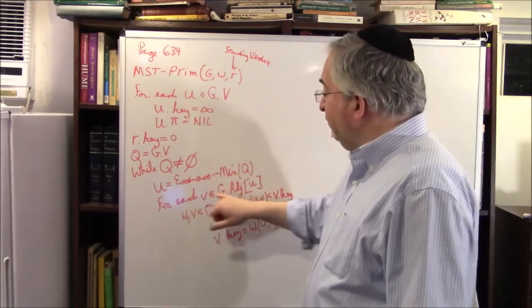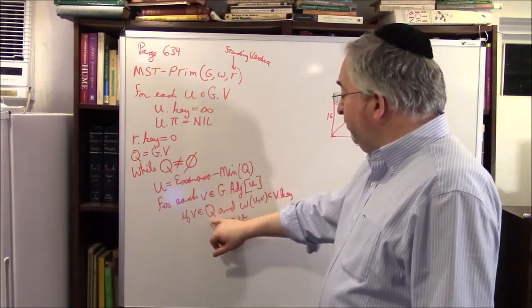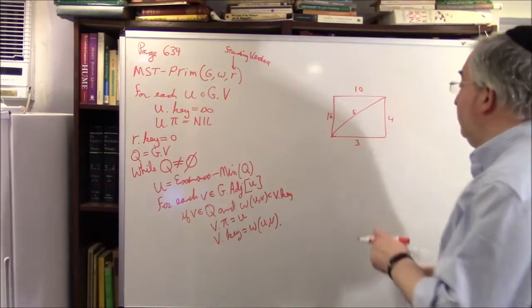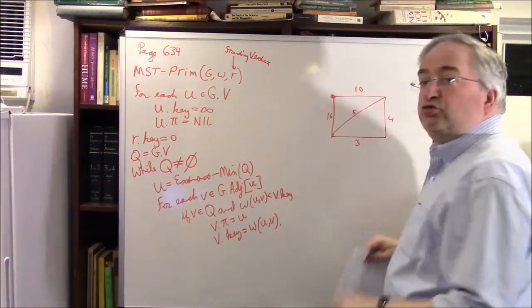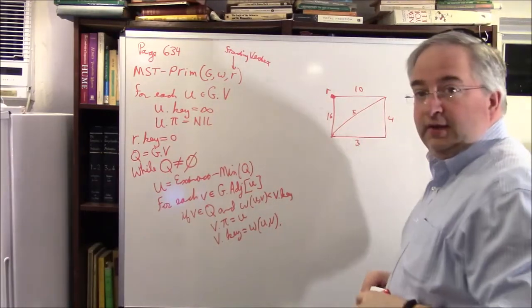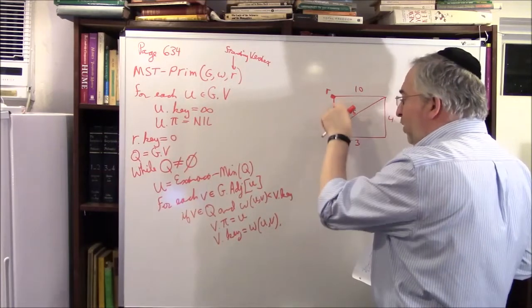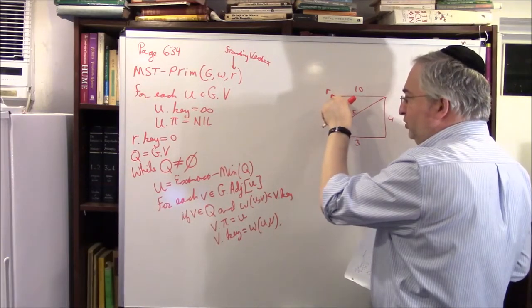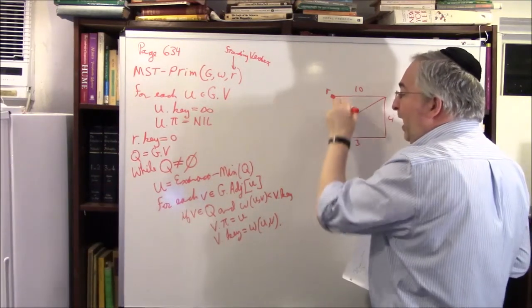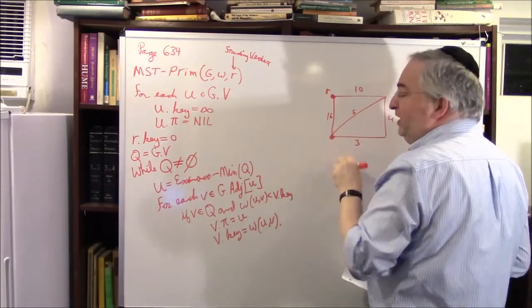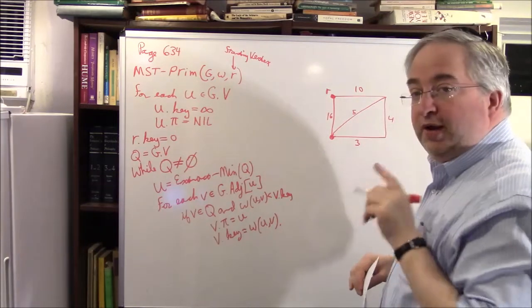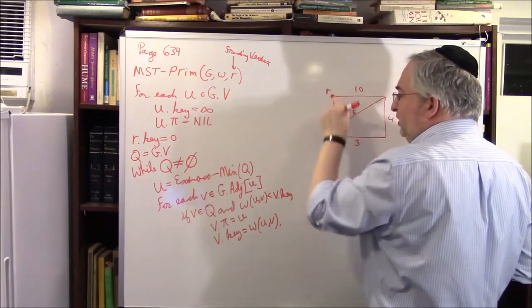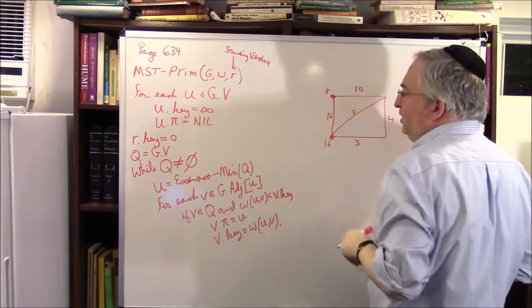U equals extract-min of Q. For each vertex V adjacent to U, if V is a member of Q and the weight W(U,V) is less than V.key, then update. Let me give you intuition: you're over here at your starting point R, and you're growing the tree. If I want to extend the tree to some point, I look at what it costs — say 16. The distance from that vertex to the tree is 16. But then I grow the tree, and now that same vertex can be reached with cost 5. Forget about 16 — try the 5. But I'm not done yet.